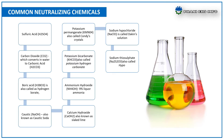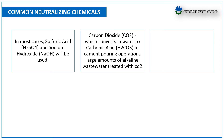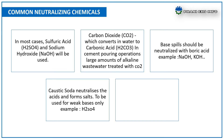In most cases, sulfuric acid and sodium hydroxide will be used. Carbon dioxide converts water to carbonic acid and is used in cement pouring operations where large amounts of alkaline waste are treated. Base spills should be neutralized with boric acid — for example, NaOH and KOH. Caustic soda neutralizes acids and forms salts; it is used for weak bases only, for example with sulfuric acid.